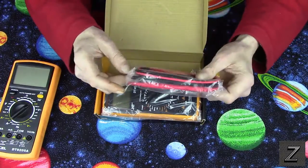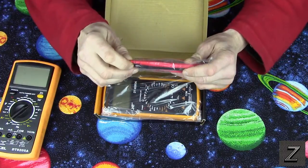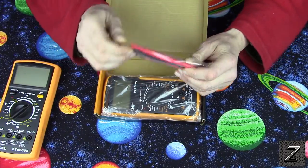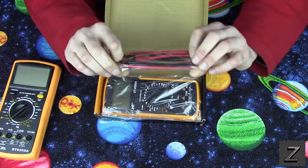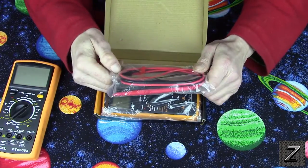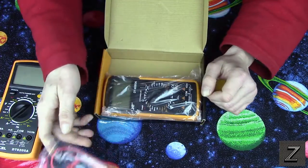Oh, we've got our test leads. Oh, these actually got little protectors on them. That's neat. Yeah, they just pull off. I've actually got some really, really good test leads, so these I probably won't even open.